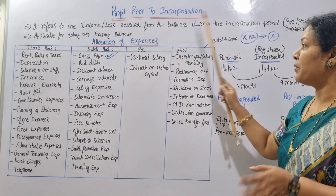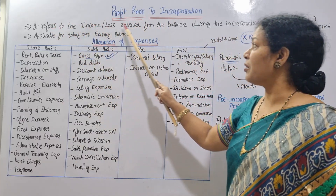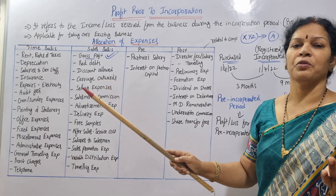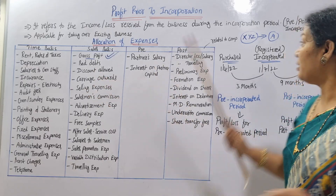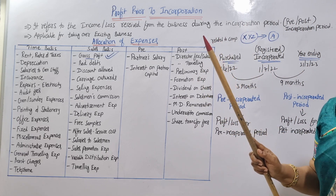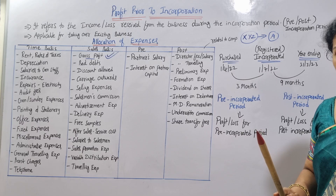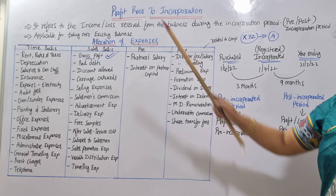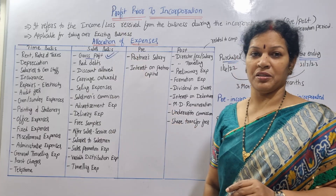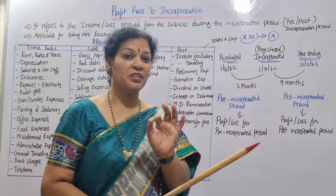Profit prior to incorporation refers to the income or loss received from the business during the pre-incorporation period. The incorporated period includes both the pre-incorporated and post-incorporated periods. This concept is applicable for taking over an existing business.